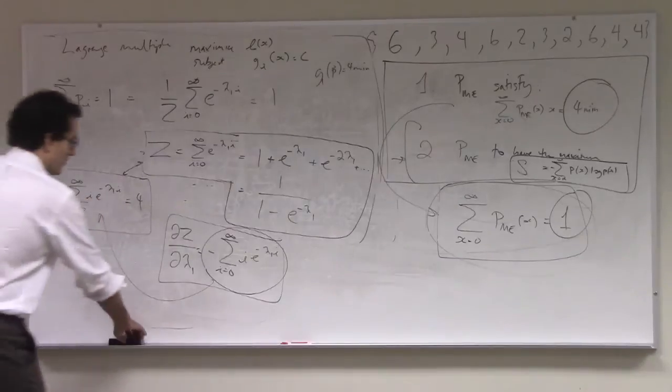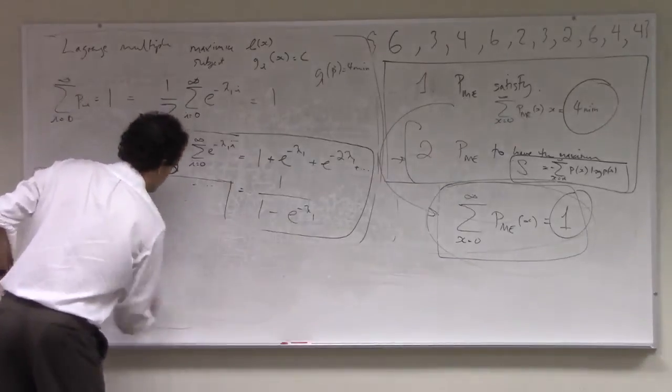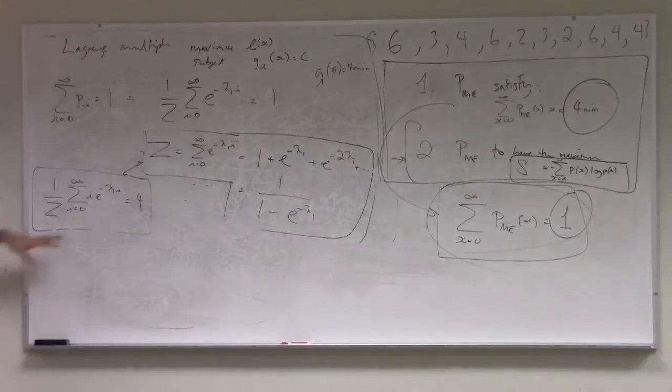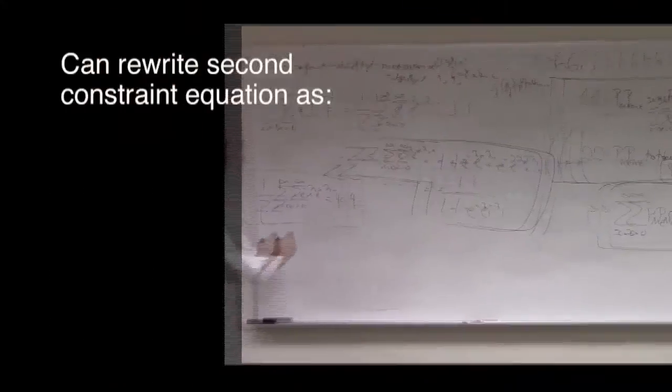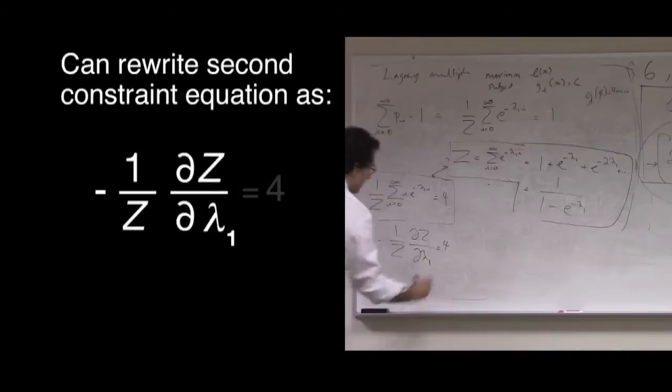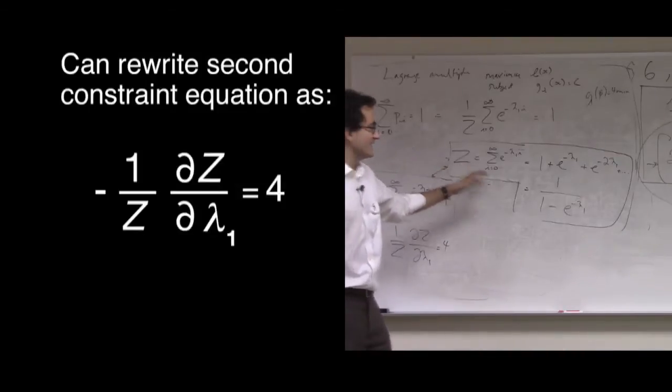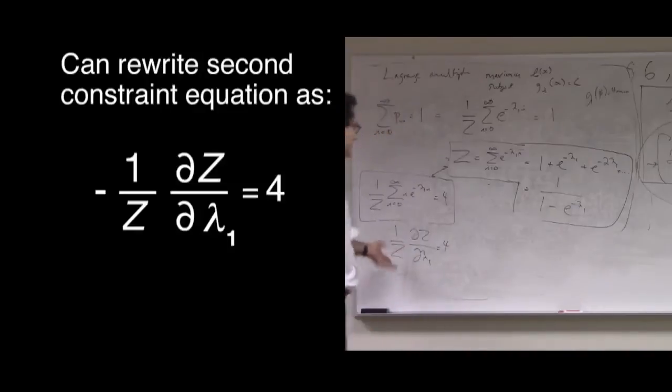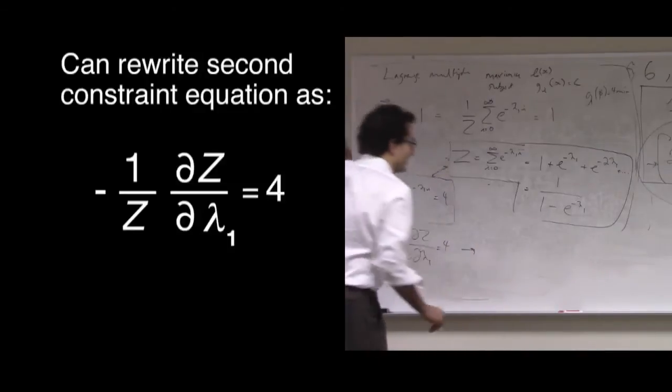And so in fact, we can now rewrite this second constraint equation here as 1 over z, minus, times, dz d lambda 1, equals 4. So, first thing we have to do is take the derivative of z with respect to lambda 1, and then we have to divide by z, and so we can do that quite easily.